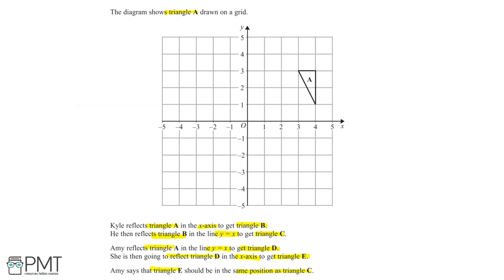We can start by reflecting triangle A in the x-axis, which is the first thing that Kyle does. We'll label the three points on triangle A 1, 2, and 3. So let's reflect each point separately. Looking at point 1, we can see that it's exactly 1 square above the x-axis. So now its reflection is 1 square below the x-axis.